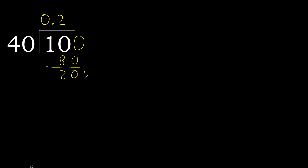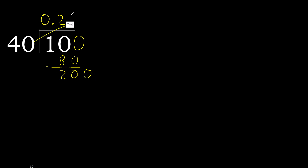Next. There is no number, therefore complete. Always complete with 0. Point is here: 200. 40 multiply by 5 is 200. It is not greater. Subtract 0.